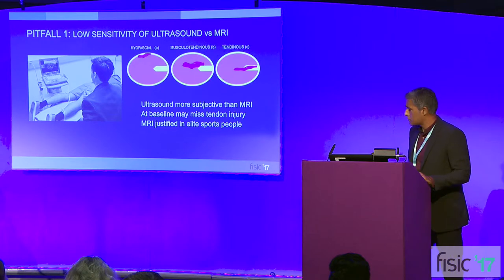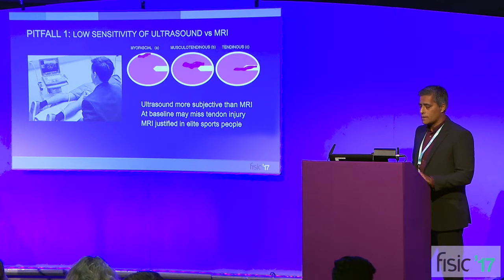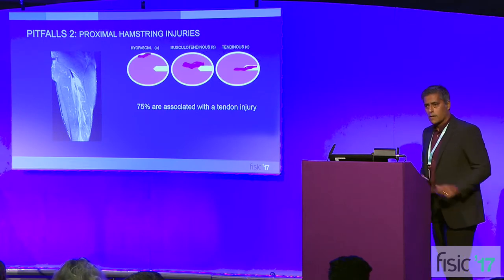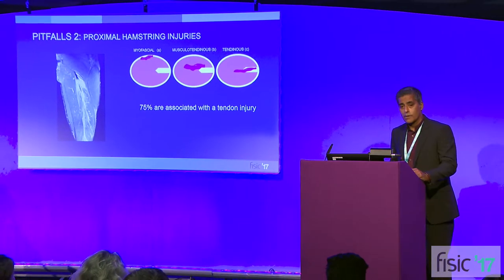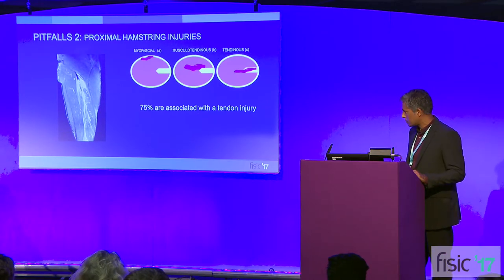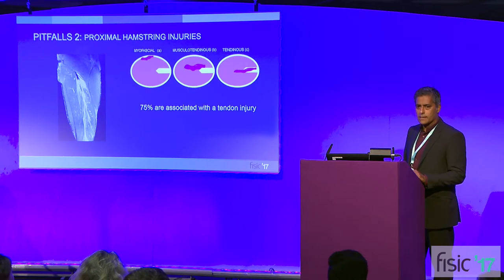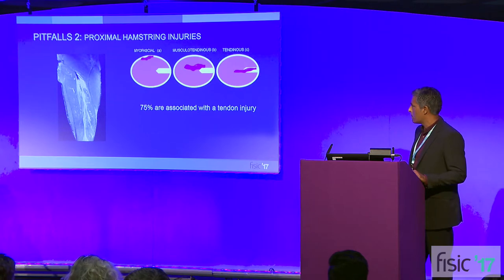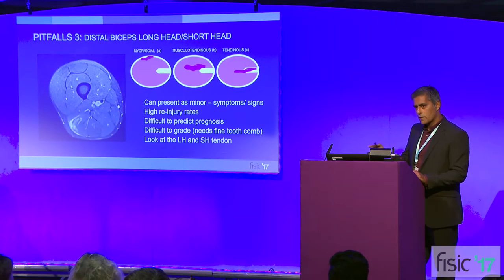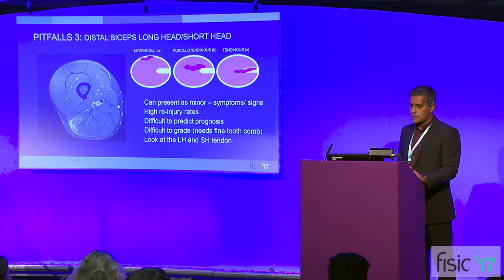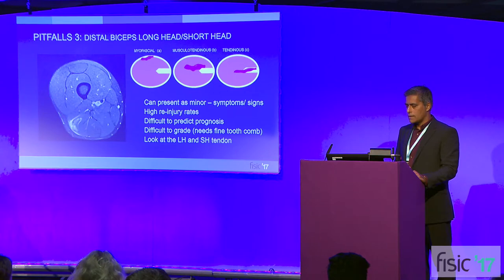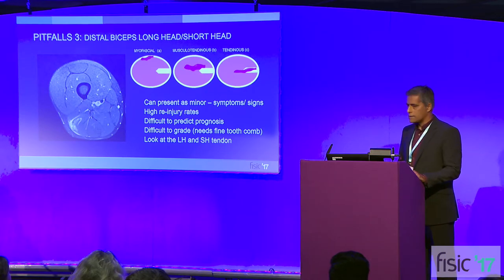Ultrasound has relatively low sensitivity versus MRI, and we would see mistakes where people depended on ultrasound alone for their initial diagnosis. It's so important to get that diagnosis right at the beginning so you don't miss a tendon injury and end up with an athlete who keeps having failed rehab — because you lose the confidence of the athlete. Ultrasound can miss a tendon injury. With proximal hamstring injuries, a lot of those presenting as mid-belly hamstring injuries can be associated with a tendon injury, so have a high index of suspicion and check that tendon, because I think that's the answer to a lot of these problems.